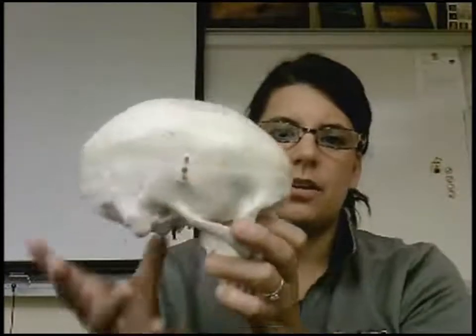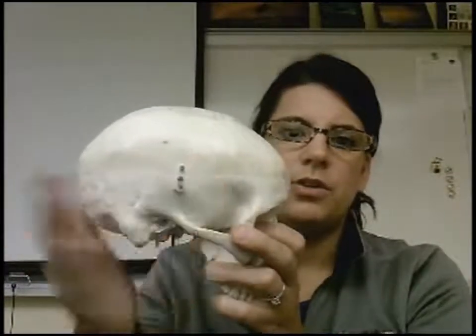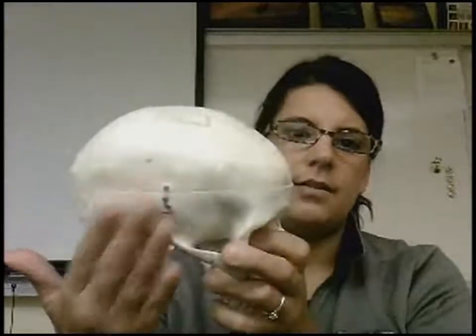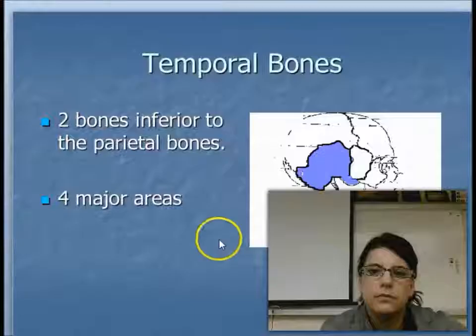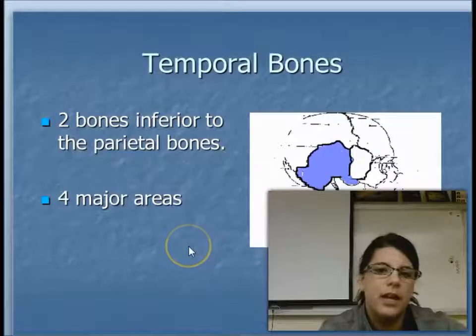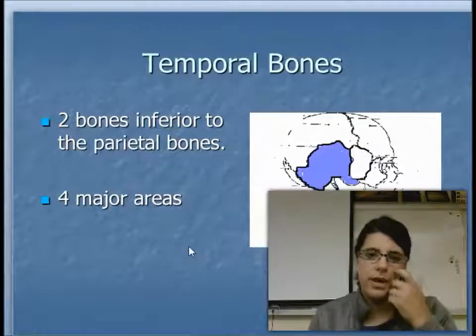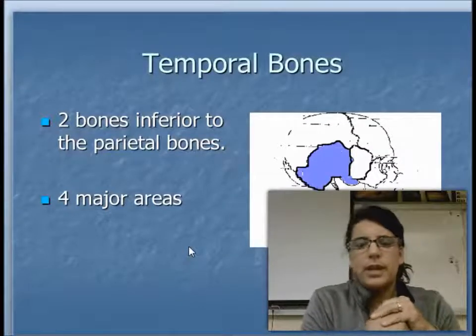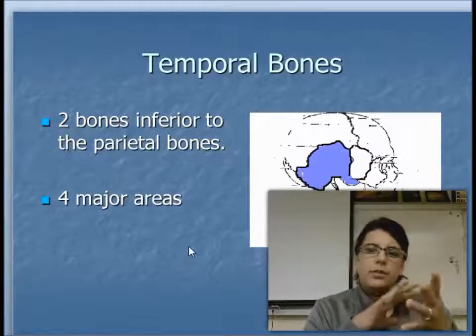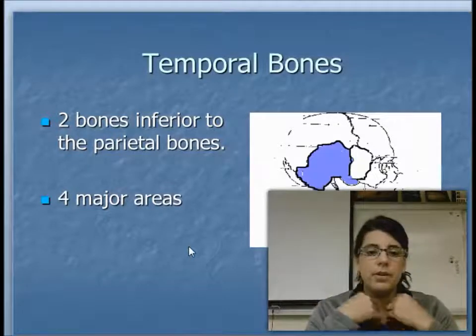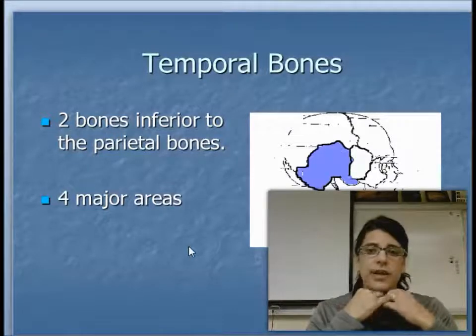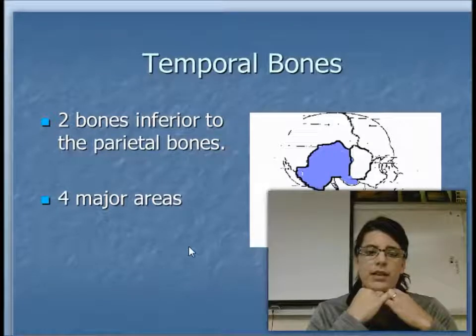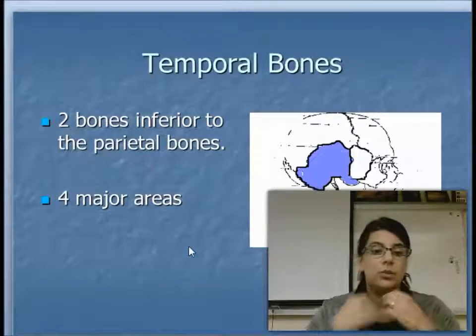The next two bones are going to be your temporal bones, which are the two bones on either side, right above your ear. Temporal bones are two bones that are right below or inferior to the parietal bones. There are actually four major areas or regions of the temporal bones, which we're not going to get into. Just know the general area of those temporal bones and know that they are connected to the parietal bones using the squamous sutures.